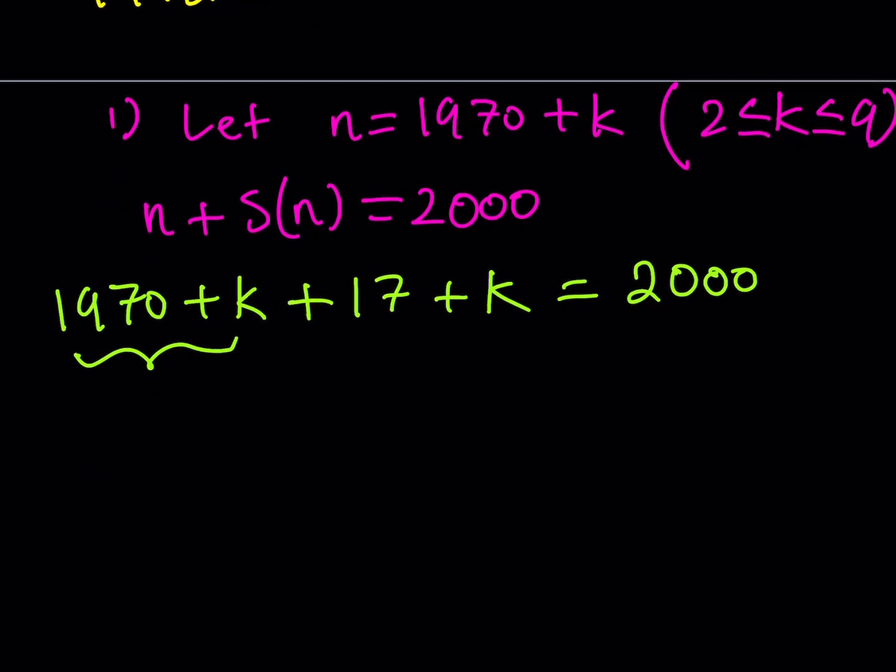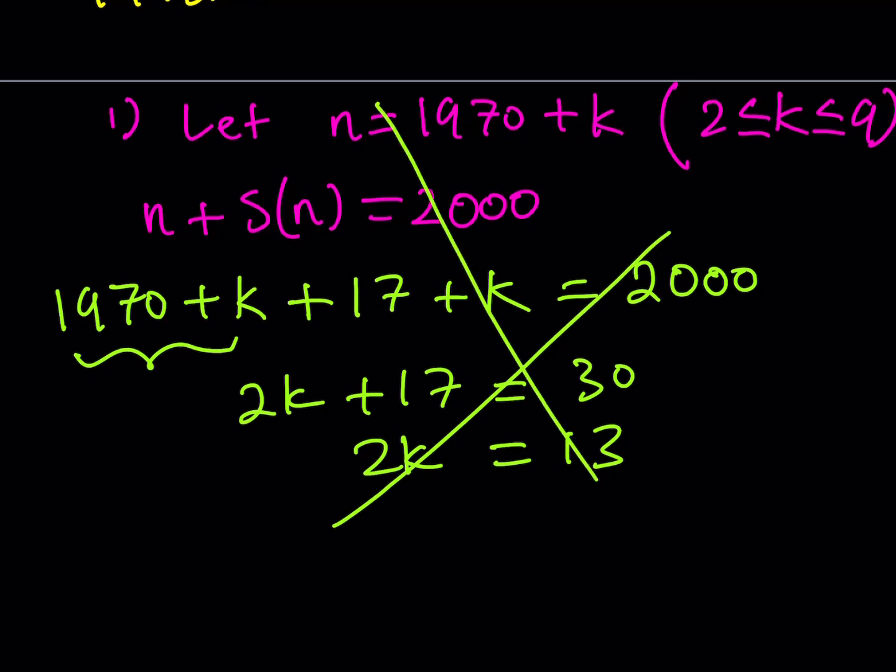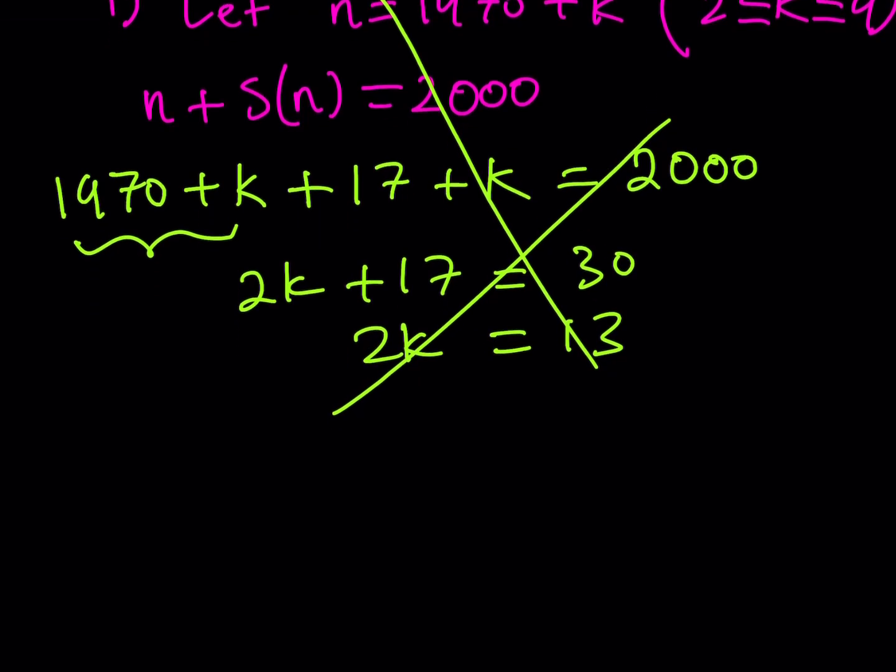Great. So from here, we get 2k plus 17 is equal to 2000 minus 1970, which is 30. And this gives us 2k is equal to 13. But unfortunately, this does not give us an integer value for k, because k needs to be an integer because n is an integer. So this solution is basically rejected. That means that our number is not going to be 1972 through 1979, which means that it's going to be greater or equal to 1980, if there is any solution.